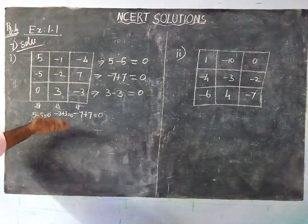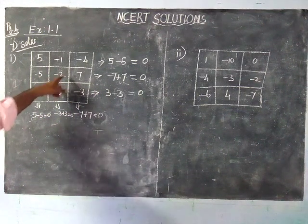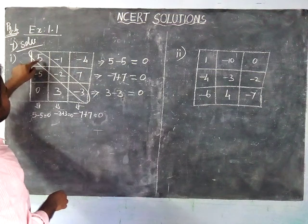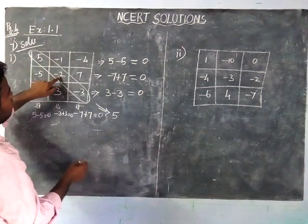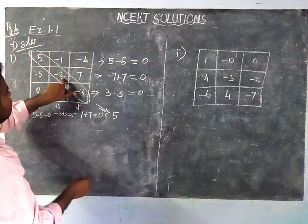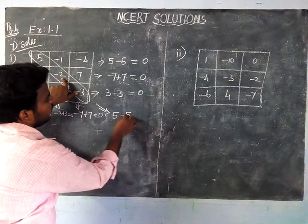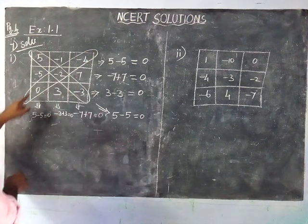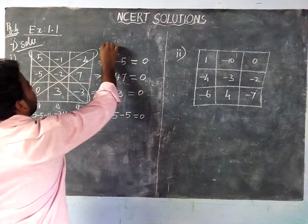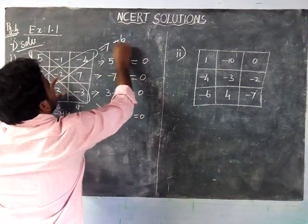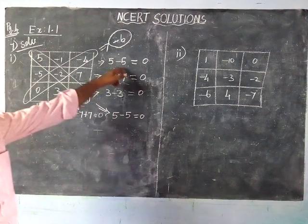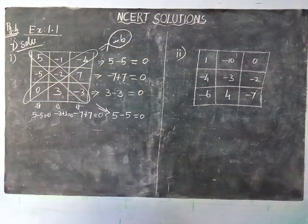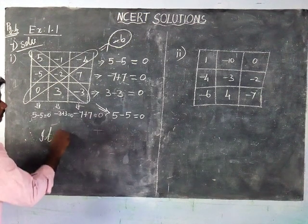We still have to check the diagonals. Checking the first diagonal: five, minus two, minus three. This is a positive number; minus two and minus three are both negative. Minus five: five minus five equals zero. Checking the other diagonal: zero, minus two, minus four. Adding these gives minus six. All columns and one diagonal are zero, but one diagonal equals minus six. Therefore, it is not a magic square.